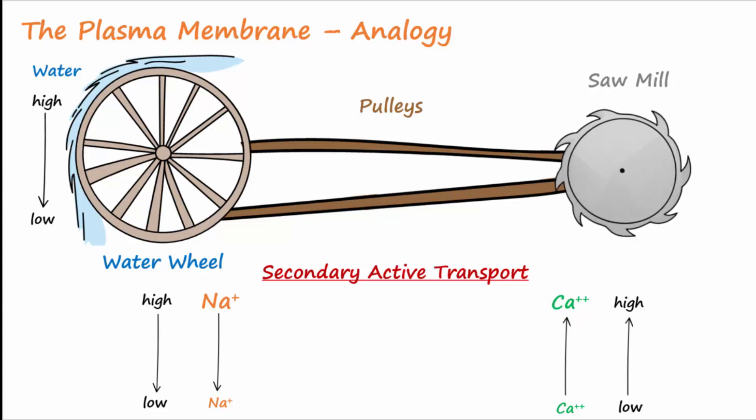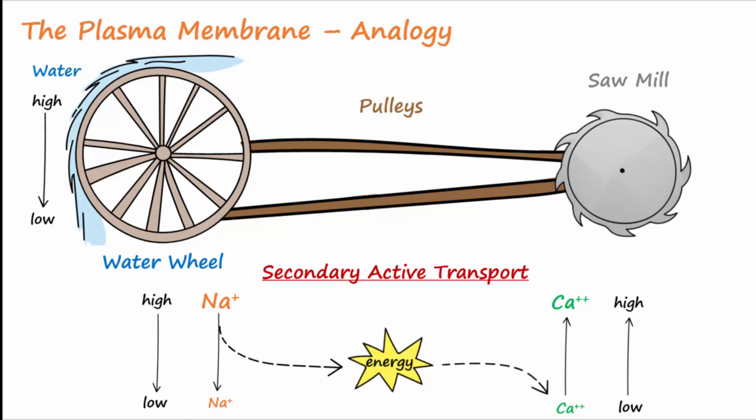Calcium going against its gradient and the saw turning are both things that would not happen unless energy is provided. And where does the energy come from? From the water flowing downhill for the saw, and from sodium going down its gradient for the secondary active transporter. With secondary active transport, it's always important to remember that one of the solutes is going down its gradient and is providing the energy for the other substance to go against its gradient.